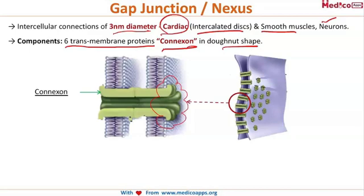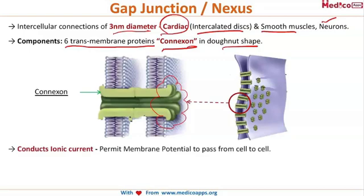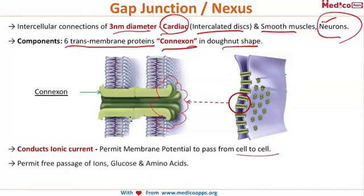The function of gap junctions is to conduct ionic current and permit membrane potential to pass from cell to cell, which is important in neurons. They also permit free passage of ions, glucose, and amino acids, unlike tight junctions. However, they do not allow the passage of proteins. Gap junctions are also known as nexus.